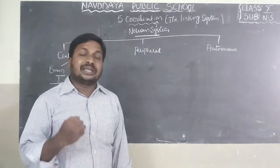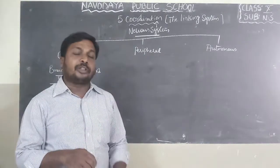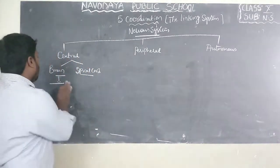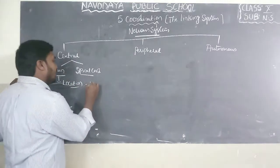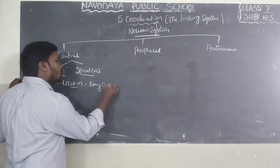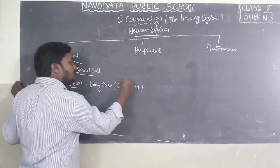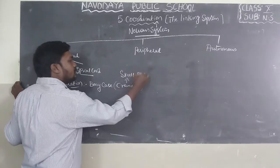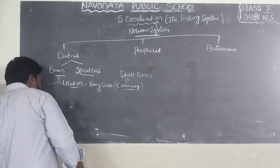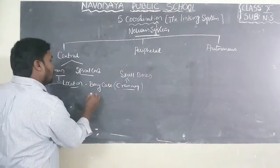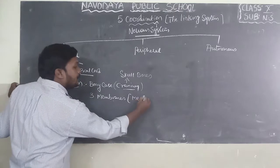Now I will explain about the brain. The brain is the most important and complicated organ in the animal kingdom. Without the brain, we cannot do anything. The brain is present in a bony case called the cranium, which is made up of skull bones. Surrounding the brain, we can find three membranes, also known as meninges.